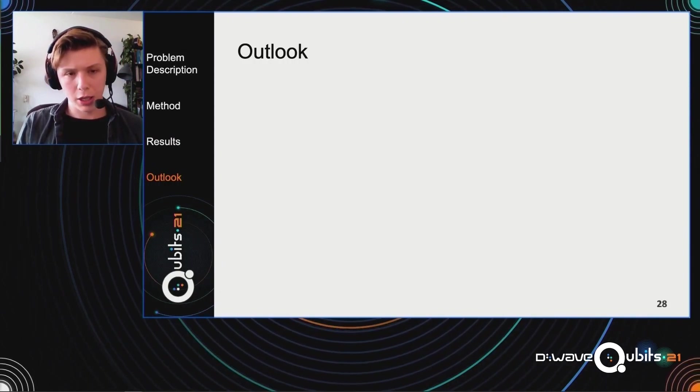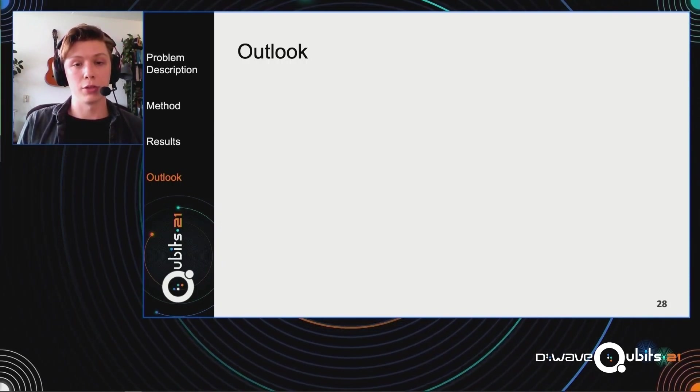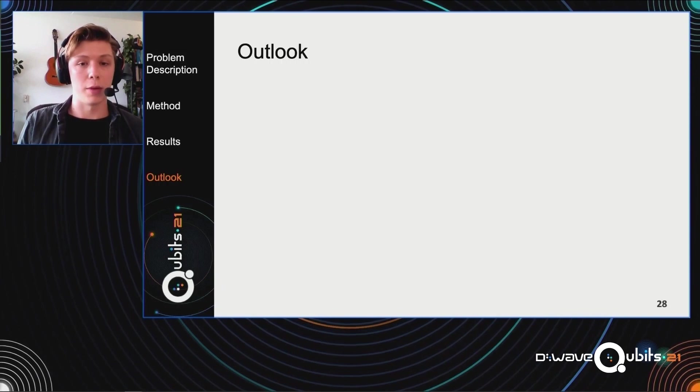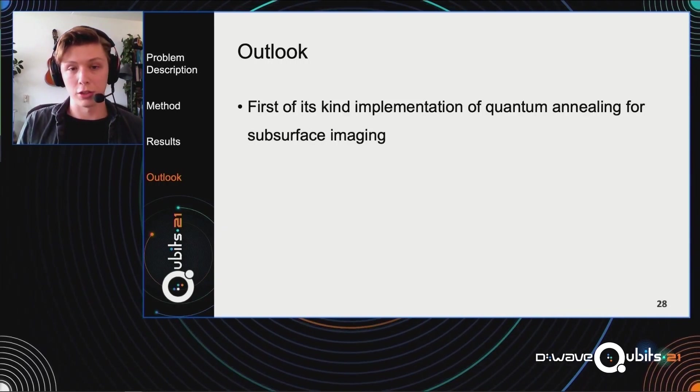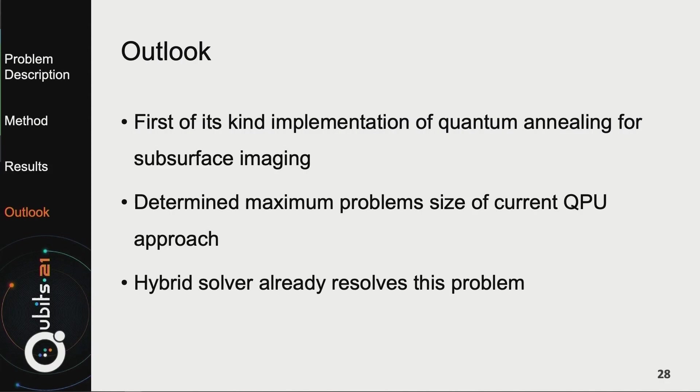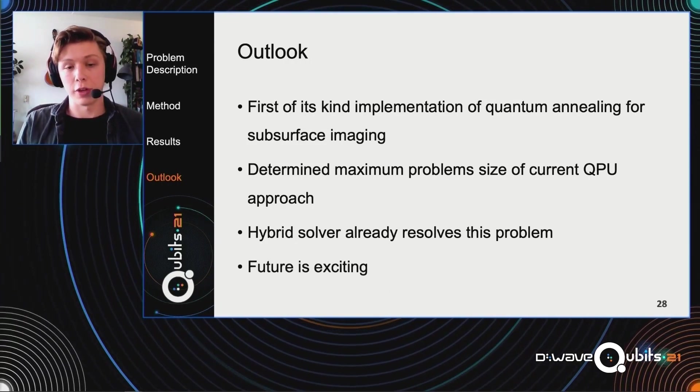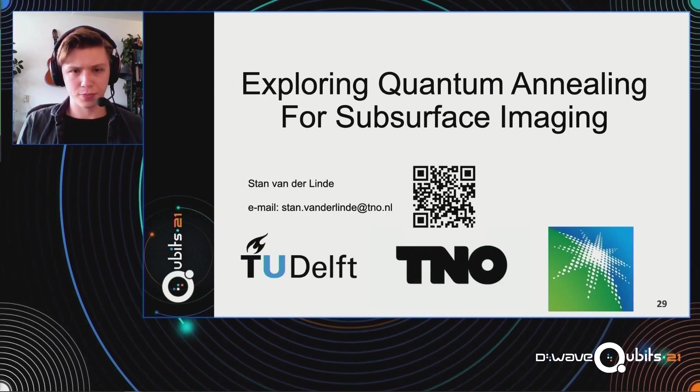After these promising results, it's time to conclude and look at the outlook. I've given you a crash course into subsurface imaging. I've shown you two binary quadratic models that can run on the quantum annealers to solve this problem. I've shown you different inputs and results based on these models. What I've actually shown you is the first of its kind implementation of a quantum annealing algorithm for subsurface imaging. We determined a maximum problem size of the current QPU approach. But right now, the hybrid solver already resolved this problem. Because of that, we would say that the future is very exciting and very promising in this field. I want to thank you for your time. I've been Stam van der Linde. I hope you enjoyed this presentation. Thank you.